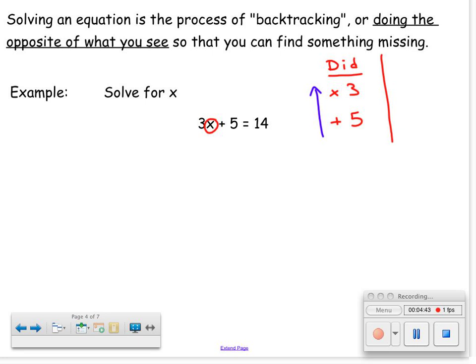So instead of adding 5 to undo this, I'm going to subtract 5. And then instead of multiplying by 3, I'm going to divide by 3. If you follow that process, and you do both of those things to both sides, you will solve the equation.